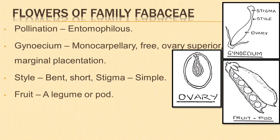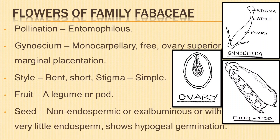The fruit is mainly a legume or pod — a dry, one-chambered fruit developing from a simple pistil and dehiscing by both margins. Seeds are either non-endospermic (ex-albuminous) or with very little endosperm, the food storage tissue. Seeds show hypogeal germination; cotyledons remain within the testa. The first two leaves formed are always simple.